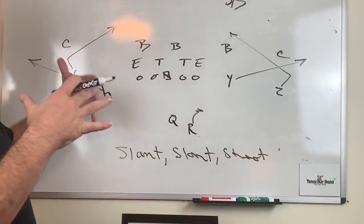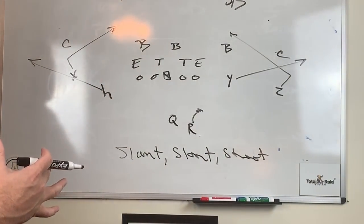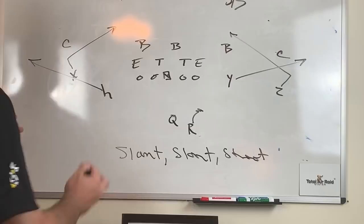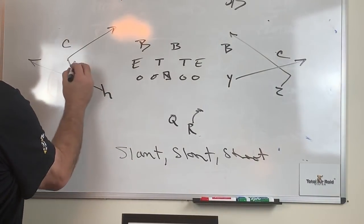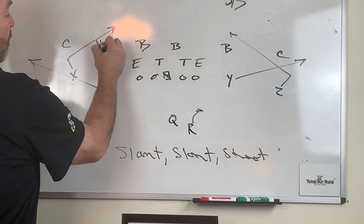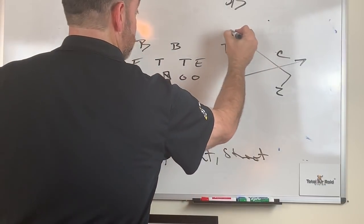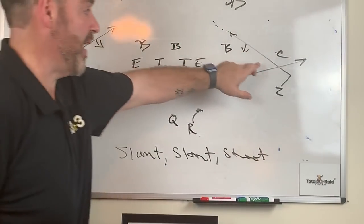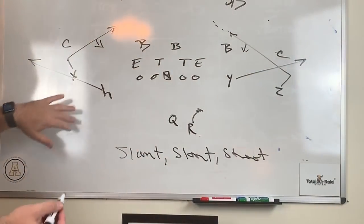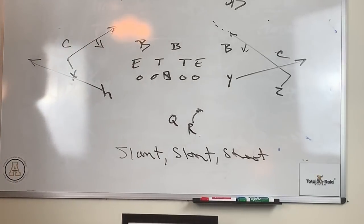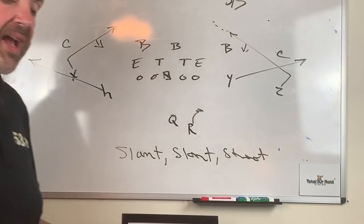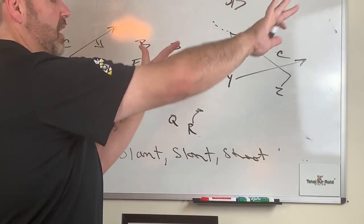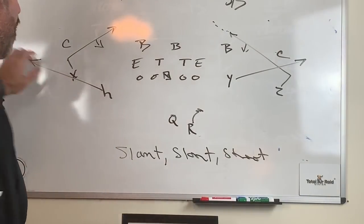Now here is what we do. We teach X and Z, the slant guys, to slant to grass. So if he has the diamond release because he has press, he'll outside release and come back in. And then what we do is teach them to go sit in a hole. It could be the first window, it could be the second window. If it's man coverage, he'll just keep running.